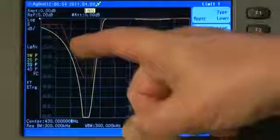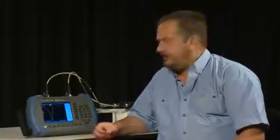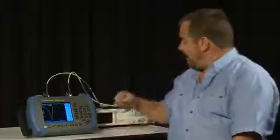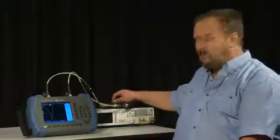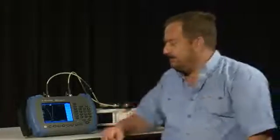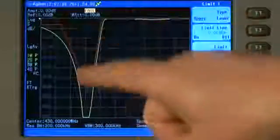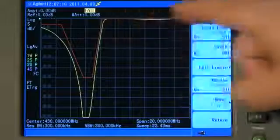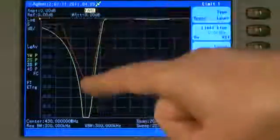The limit line capability on this series of analyzers makes this task incredibly simple for minimal effort upfront. Here I'm measuring the same duplexer or diplexer filter that we measured previously, but I've created some limit lines. You can see I've created a limit line around the passband and the notch of this filter.